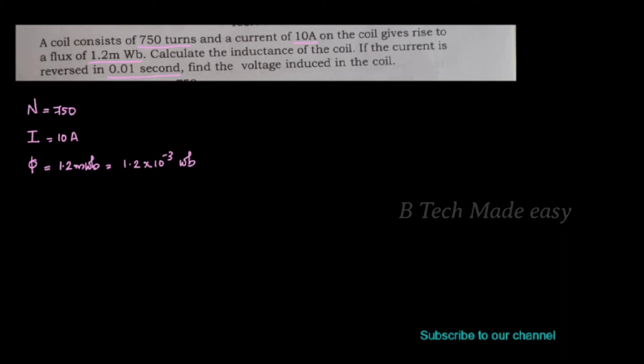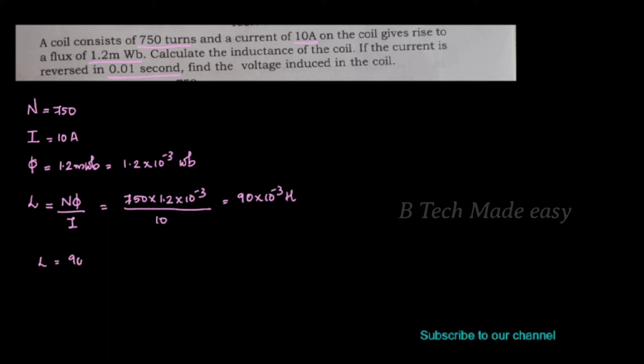The coil has 750 turns. Current I = 10 amperes, and flux φ = 1.2 milliwebers = 1.2 × 10⁻³ Wb. The inductance L = Nφ/I = 750 × 1.2 × 10⁻³ divided by 10. Therefore L = 90 millihenry.